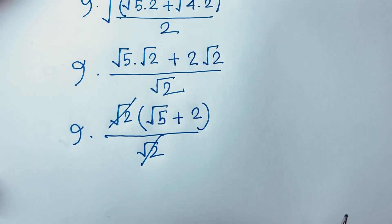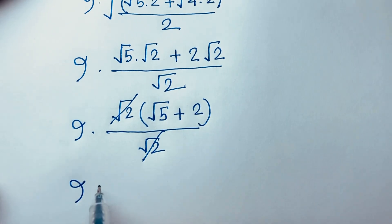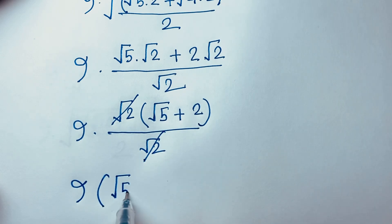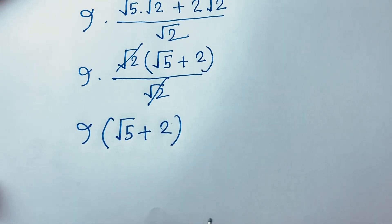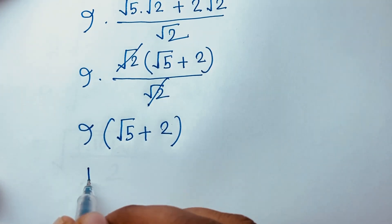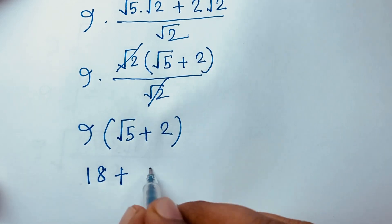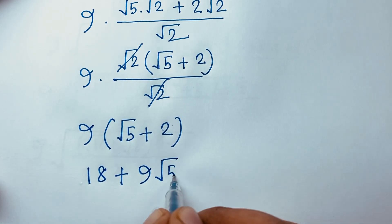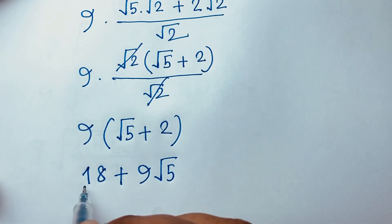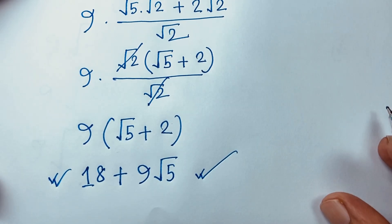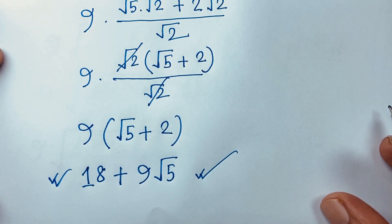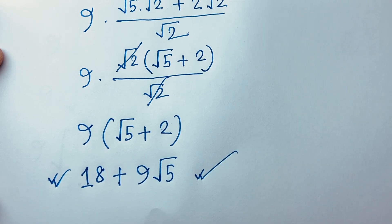We find out 9 times (square root 5 plus 2). So 9 times 2 equals 18 and 9 times square root 5 equals 9 square root 5. This is our final answer: 18 plus 9 square root 5. Thank you all. If you enjoyed this video please subscribe to my channel. Goodbye, take care.